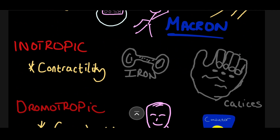Next, inotropic. What does this sound like? Iron, right? You think of the gym. These people will have big muscles. They are contracting their muscles. Inotropic — contractility.